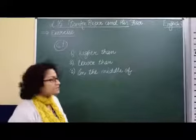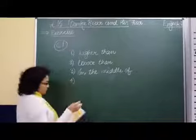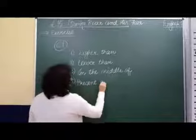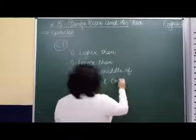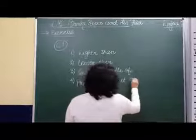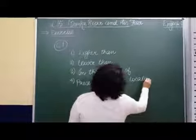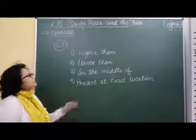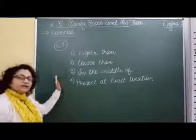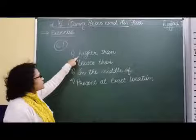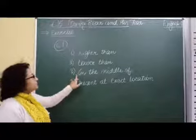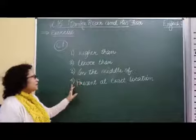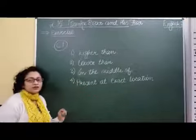The last one is at. At means present at the exact location. So to summarize: above means higher than, below means lower than, between means in the middle, and at means present at the exact location.